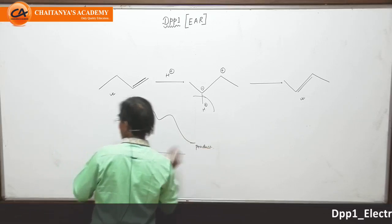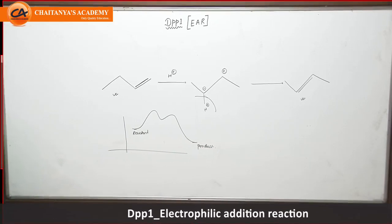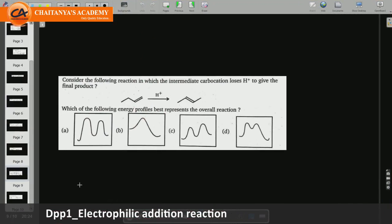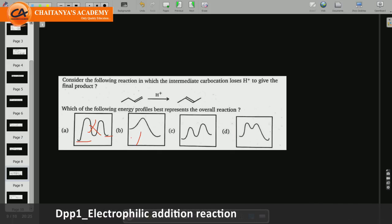So can we say that product is more stable than reactant? If you compare it with the four options that are provided to you, option A is a two step reaction but in this case product is less stable than reactant, so this is wrong. Second option is single step, not possible.